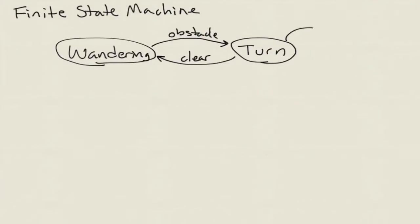During the turn, it might encounter an obstacle again. We represent that with an edge that points back to the same turn state. When dirt is detected, it goes into a spin state and then returns to wandering when that spot is clean.